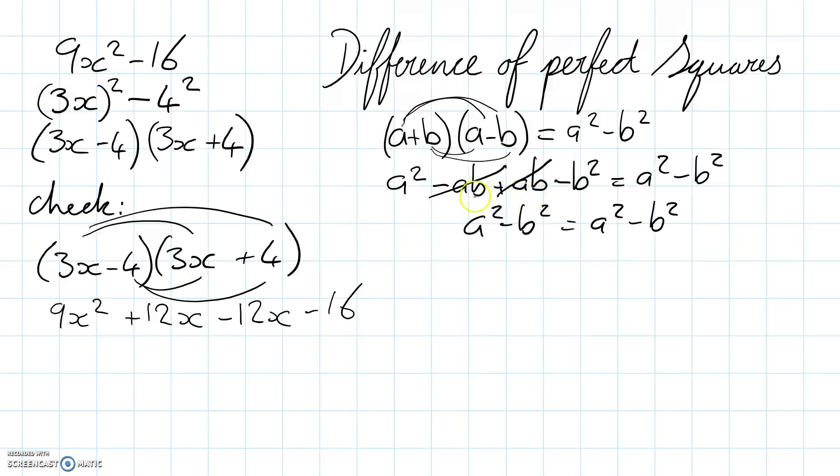And you'll see that just like they did over here, these middle terms cancel out and we get 9x² minus 16.